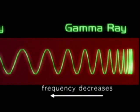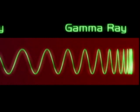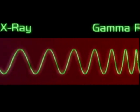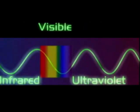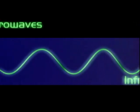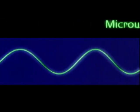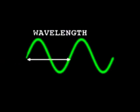The electromagnetic spectrum consists of high-frequency gamma rays and X-rays at one end. At lower frequencies there are ultraviolet, visible light, and infrared waves. At still lower frequencies there are microwaves and radio waves. All these waves travel at the speed of light, and can be described by their wavelength or frequency.